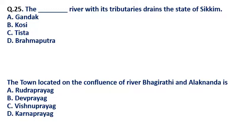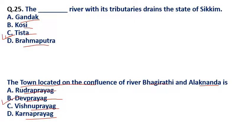Question 25 consists of two parts. Part A: The Tista River with its tributaries drains which state — (a) Gandak, (b) Kosi, (c) Tista, (d) Brahmaputra? The correct answer is Tista — it drains the state of Sikkim. Part B: The town located at the confluence of rivers Bhagirathi and Alaknanda is — (a) Rudraprayag, (b) Devprayag, (c) Vishnuprayag, (d) Karnaprayag? The correct answer is option B — Devprayag.